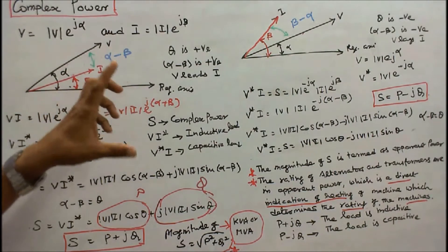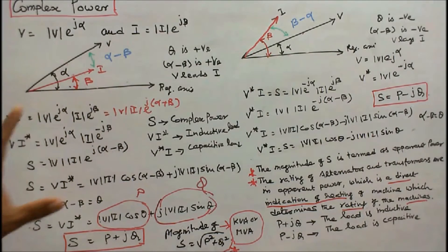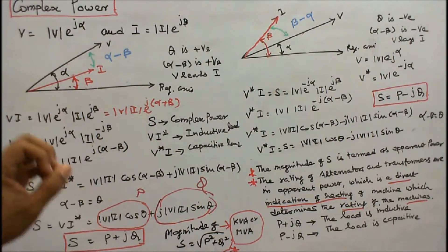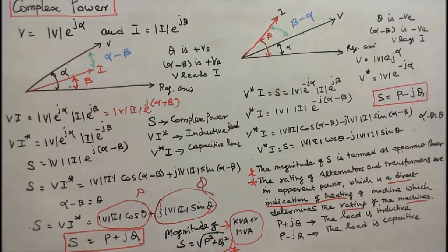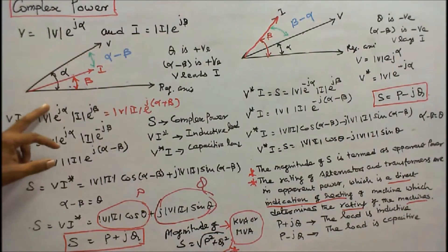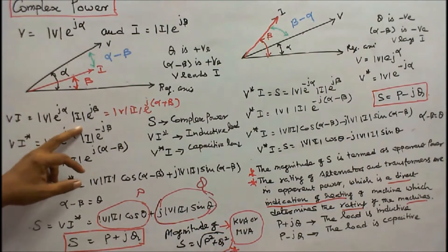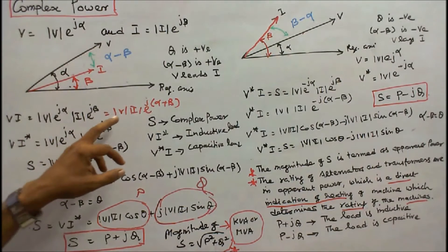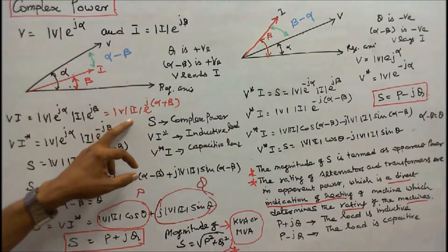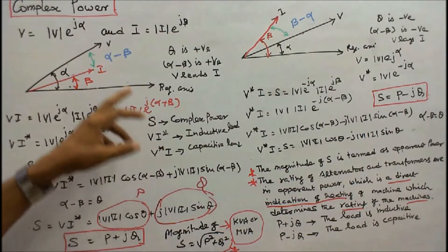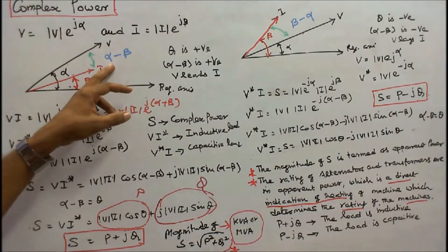S is called complex power. That is equal to P plus jQ or P minus jQ. Here, S is equal to V times I, which equals modulus of V times e to the power j-alpha, multiplied by modulus of I times e to the power j-beta. That equals modulus of V times modulus of I times e to the power j(alpha plus beta). Here, this should be alpha minus beta.